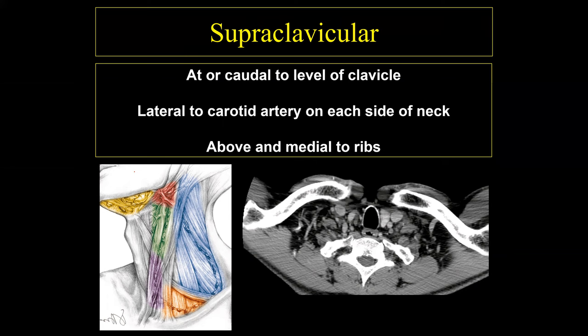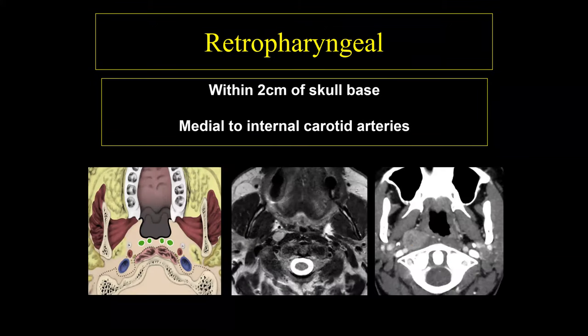The supraclavicular lymph nodes connect the anterior and posterior limbs. On axial images, if I can see the clavicle, any lymph nodes in that region are supraclavicular. The majority of lymph nodes drain head and neck cancers, but an isolated supraclavicular lymph node should make us think of an aero-upper digestive tract tumor — or tumors below the clavicle such as breast cancer, lung cancer, GI cancer, and also Hodgkin's disease and lymphoma.